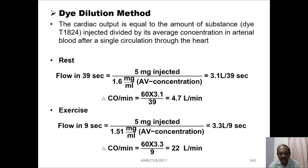The second method is the dye dilution method. In this method, cardiac output equals the amount of substance injected divided by its average concentration in arterial blood after a single circulation through the heart. The dye used is T1824, which is totally harmless and does not interfere with physiological functions.